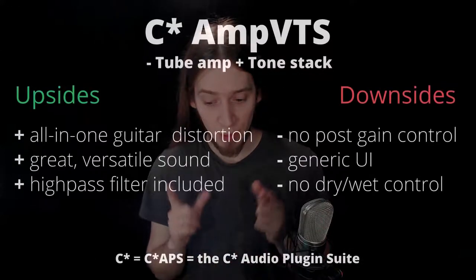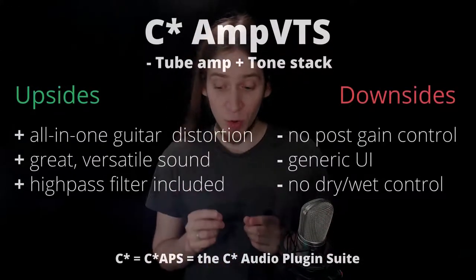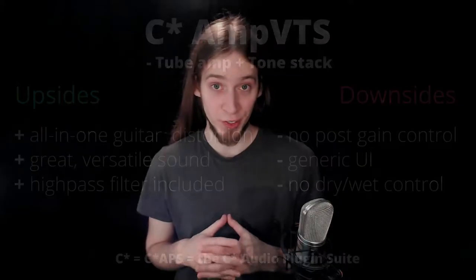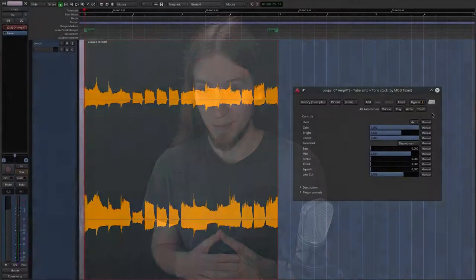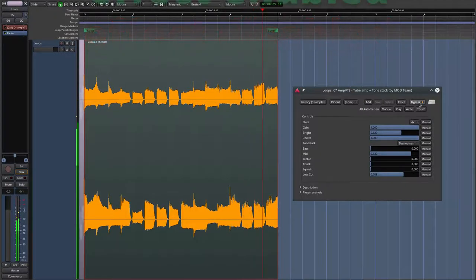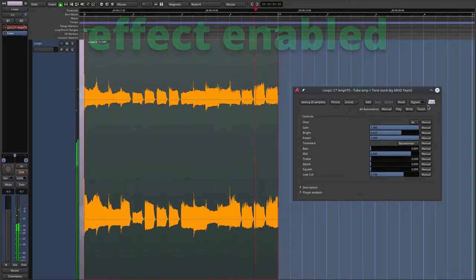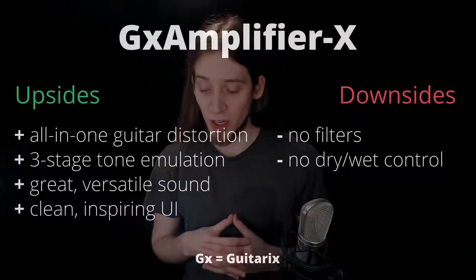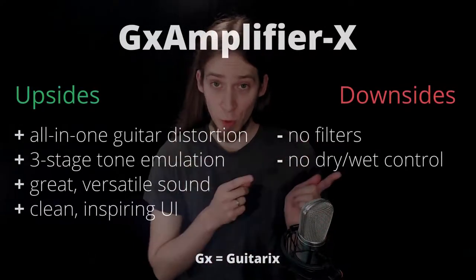CAPS Amp VTS — Tube Amp Plus Tone Stack. This is a great all-in-one plugin for guitar distortion. Don't be misled by a lack of a custom GUI — it sounds great, and not just on guitars. GX Amplifier X is a fancy-looking, great-sounding, all-in-one guitar distortion suite with tube, cabinet and tone stack emulation.